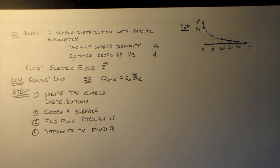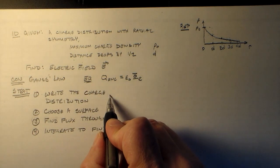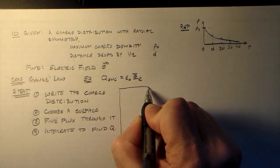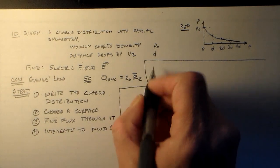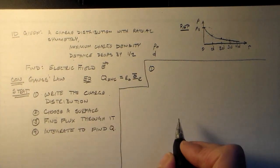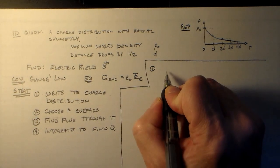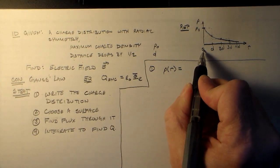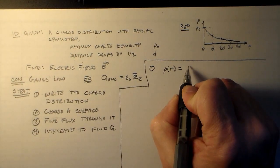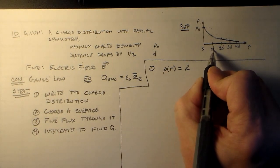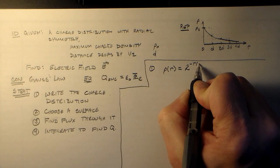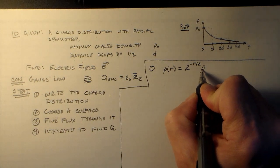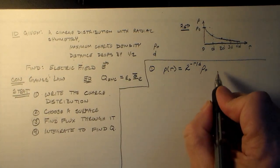Let's go through this. First, we write the charge distribution. That means ρ(r) — starting off at ρ₀ and going down. We said that for every full distance d, the charge density drops by half. So it's just 2^(-r/d) times ρ naught. Quite simple.